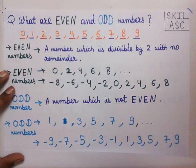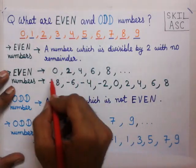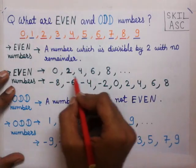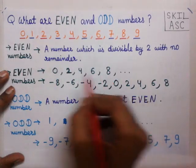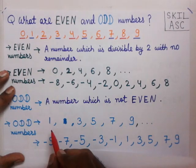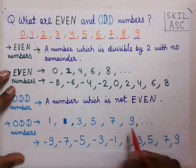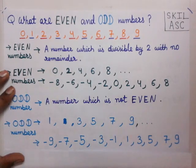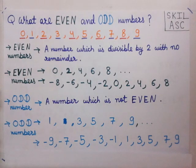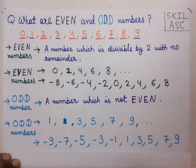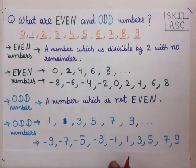Remember these numbers: 0, 2, 4, 6, 8 are even numbers, and 1, 3, 5, 7, 9 are odd numbers. You must remember these because they will be useful to detect whether any number is odd or even.